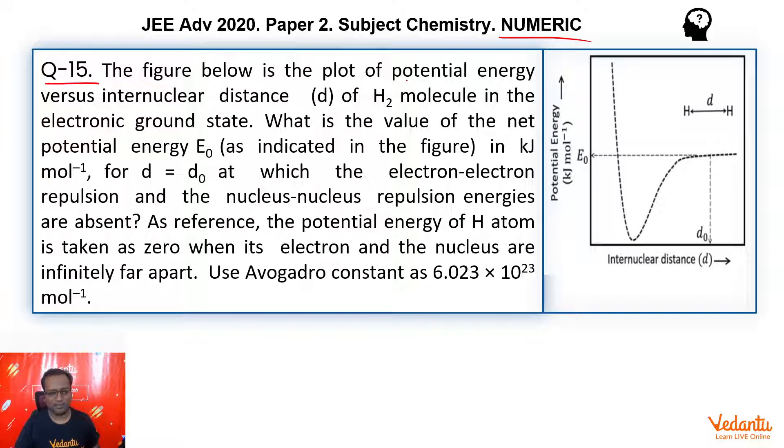The figure below is the plot of potential energy versus internuclear distance d of a hydrogen molecule in the electronic ground state. That means there is one atom H, there is another atom H. And in ke bich ka jo centers ka jo distances, that is given to as D. What is the value of the net potential energy E0 at a distance d equal to D0 for which the electron electron repulsion and nucleus nucleus repulsion are absent.